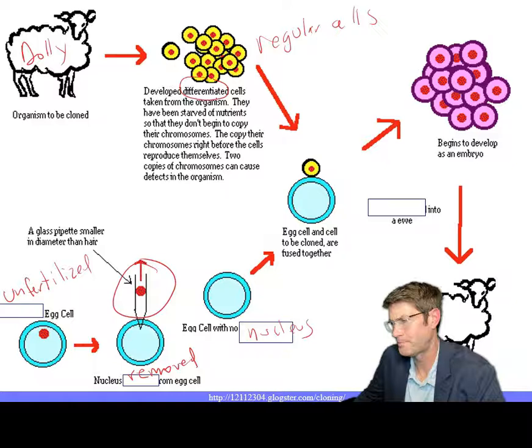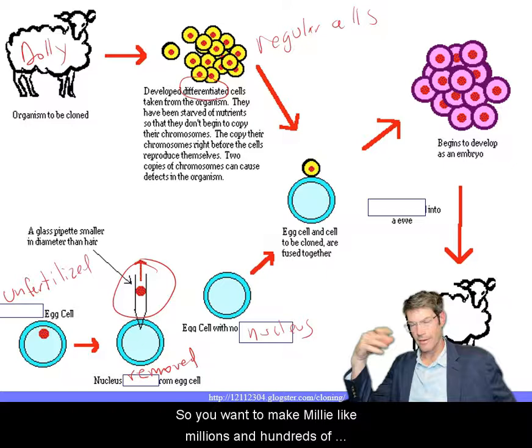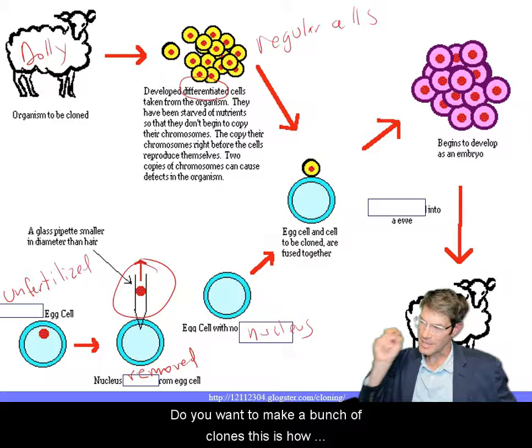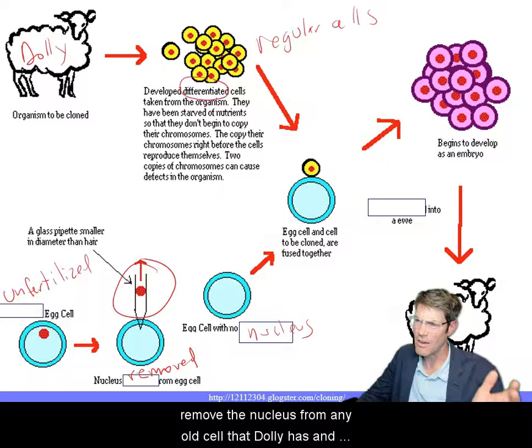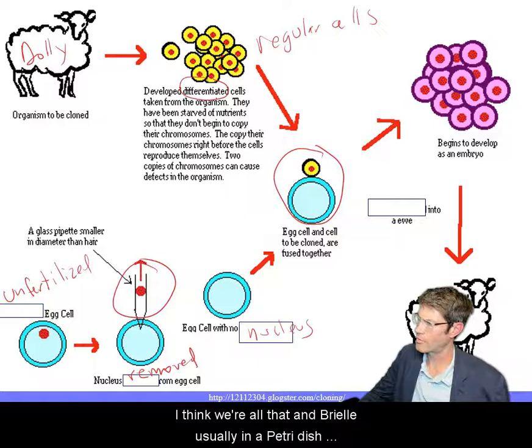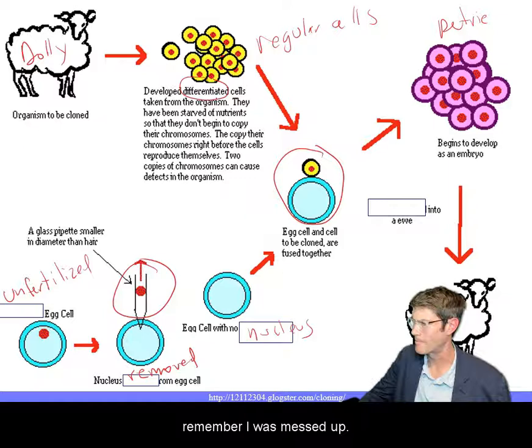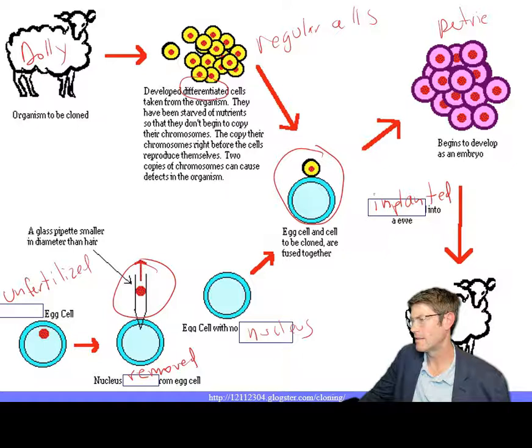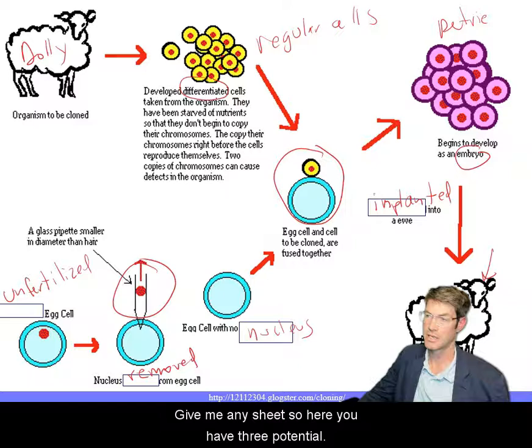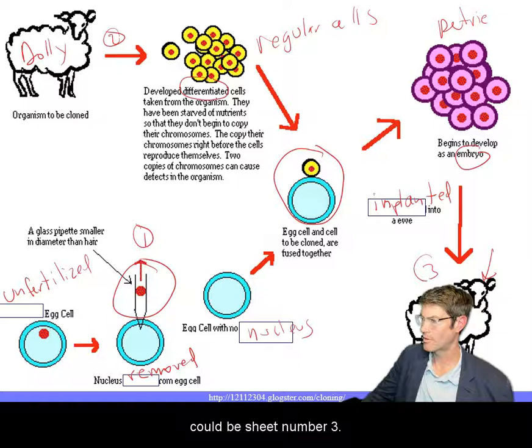Say Dolly has the best wool around and you want to make hundreds or thousands of Dolly clones. You remove a nucleus from any cell Dolly has, fuse them together, and grow that embryo in a petri dish. Once it's developing well, you implant the embryo into an actual sheep — which could be any sheep. So you potentially have three different sheep involved in the process.